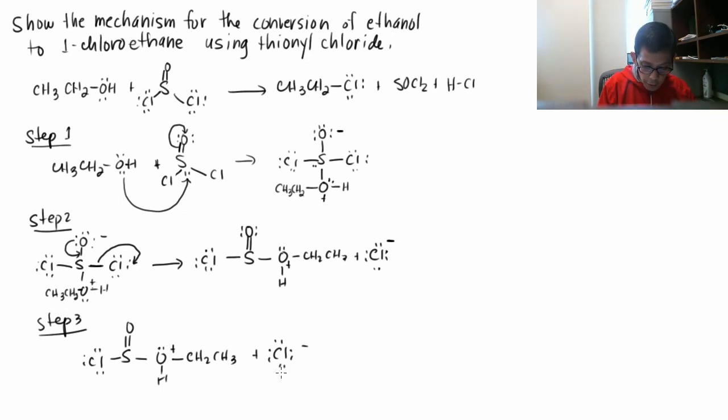One of the lone pairs on the Cl minus attacks the carbon which is right next to the positively charged oxygen and what happens is this bond between the carbon and the oxygen goes to oxygen as a second lone pair and what happens next is this bond between sulfur gets released.